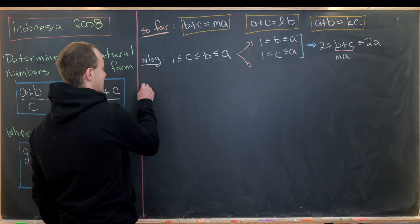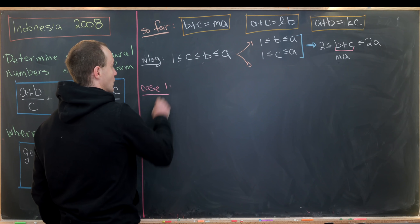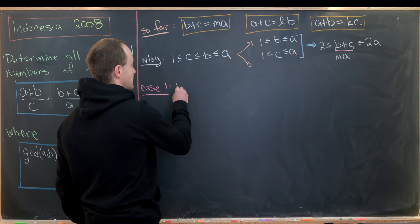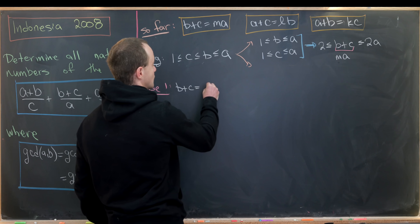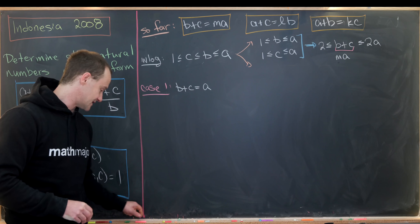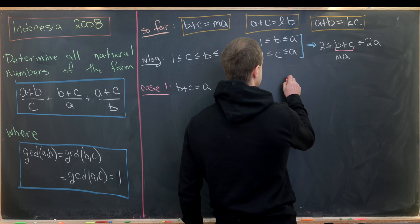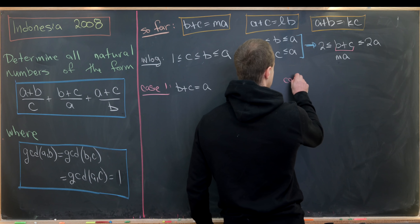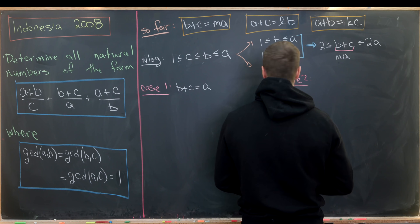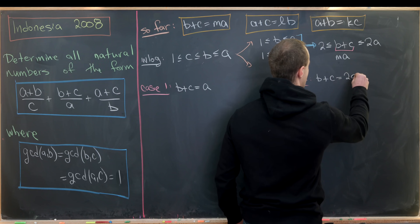Case 1 is B+C = A (the M=1 case). Case 2 is B+C = 2A (the M=2 case). Let's focus on Case 1 first.